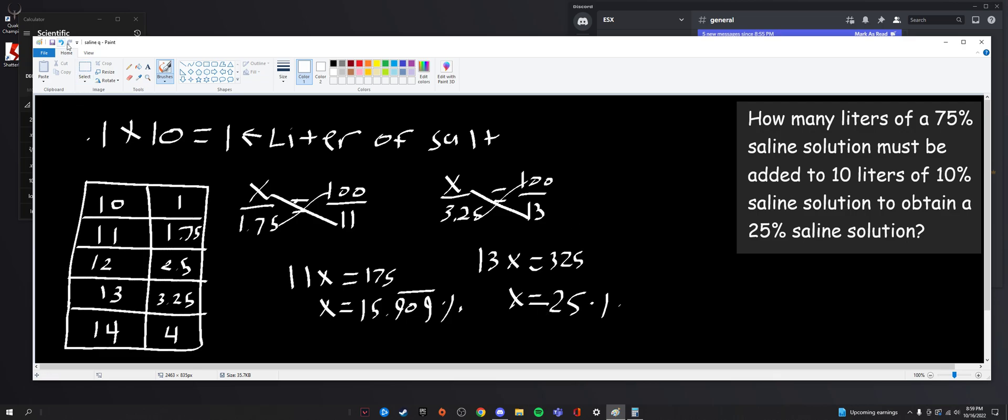Meaning since this is 13 and we started with 10, do 13 minus 10, this equals 3. That's our answer. We would have to add 3 liters of a 75% salt solution to get a 25% salt solution.